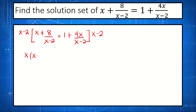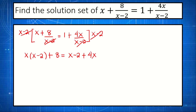Canceling out x minus 2 on the left, we get x plus 8. On the right: 1 times x minus 2, that's x minus 2, plus 4x times x minus 2 divided by x minus 2 — cancel out x minus 2 — leaving 4x. Simplifying: x times x gives x squared, x times negative 2 gives negative 2x, plus 8. On the right, combining x plus 4x gives 5x minus 2.